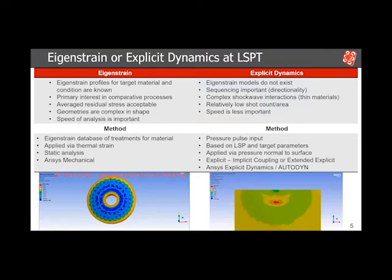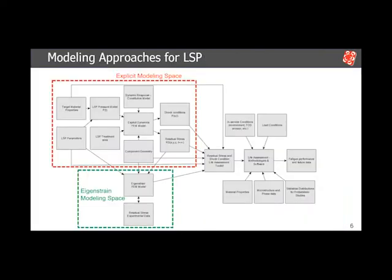With explicit dynamics, we're able to simulate the pressure pulses generated by the laser peening process on the surface of materials, evaluate how the material responds to those input pressures, and then extract residual stress profiles. Computational resources for explicit dynamics are substantially higher — often at least an order of magnitude longer in simulation time compared to eigenstrain. Our modeling and simulation activities fit into predicting fatigue life. We have two modules: the explicit modeling space has a large variety of parameters, while the eigenstrain modeling space is much simpler in its application.